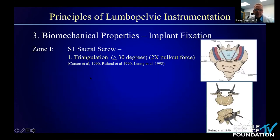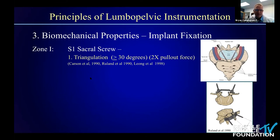Transitioning to implant fixation biomechanical properties — the third principle — starting with zone one, looking at S1 sacral screws alone. A key finding is the concept of triangulation, advocated decades ago by Drs. Gaines, Carson, Asher, and Steffi. Early studies showed pullout force could be increased two-fold with approximately 25 to 30 degrees of angulation of screws with a transverse loader or cross-connector — one of the first cross-connector designs was by Dr. Art Steffi back in 1989.